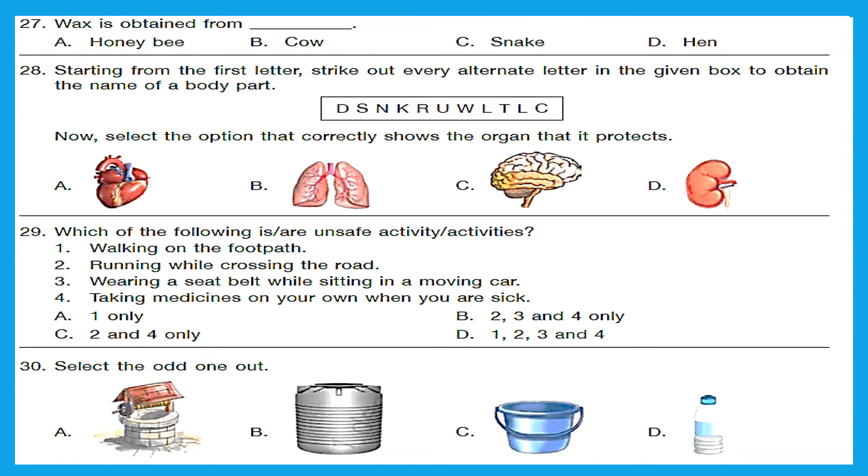Question 27. Wax is obtained from? That's an easy one. Honey bee provides wax. Option A is the right answer. Question 28. Starting with the first letter, strike out every alternate letter in the given box to obtain the name of a body part. So let's do the striking out. D, N is gone, R is gone, W is gone, T is gone and C is gone. What do we get? We get skull. Now select the option that correctly shows the organ that it protects. What is inside skull? Skull protects our brain. Option C is the right answer.